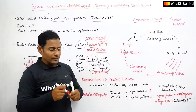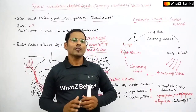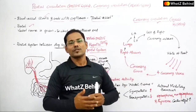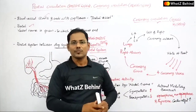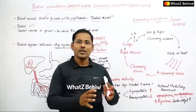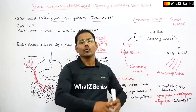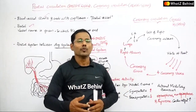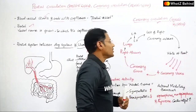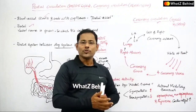Coronary circulation means hridaya prasarana — the circulation of blood through the heart muscle itself. Blood is pumped from the heart to the body, and from the body it comes back to the heart, then to the lungs, and back again. Coronary circulation has two components: pulmonary circulation and systemic circulation. Additionally, there is a special cardiac circulation — coronary circulation — that supplies the heart muscle itself.